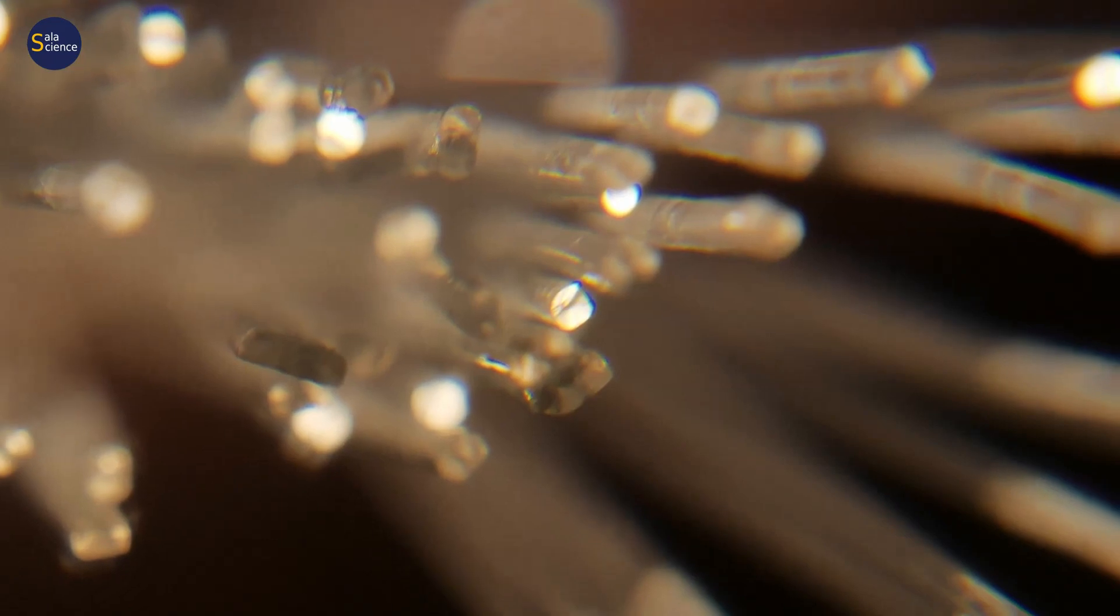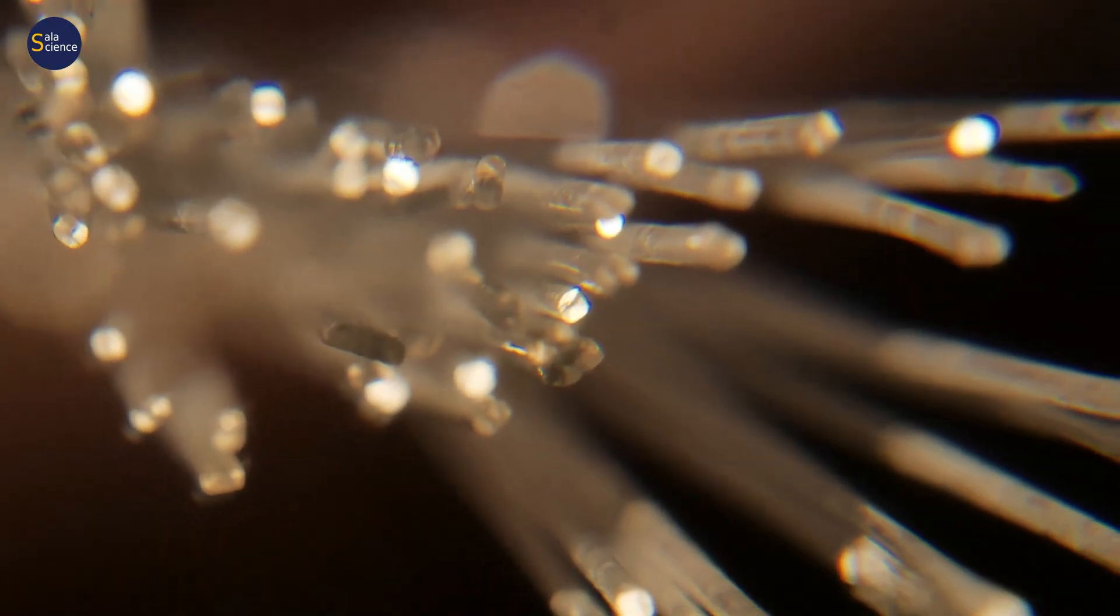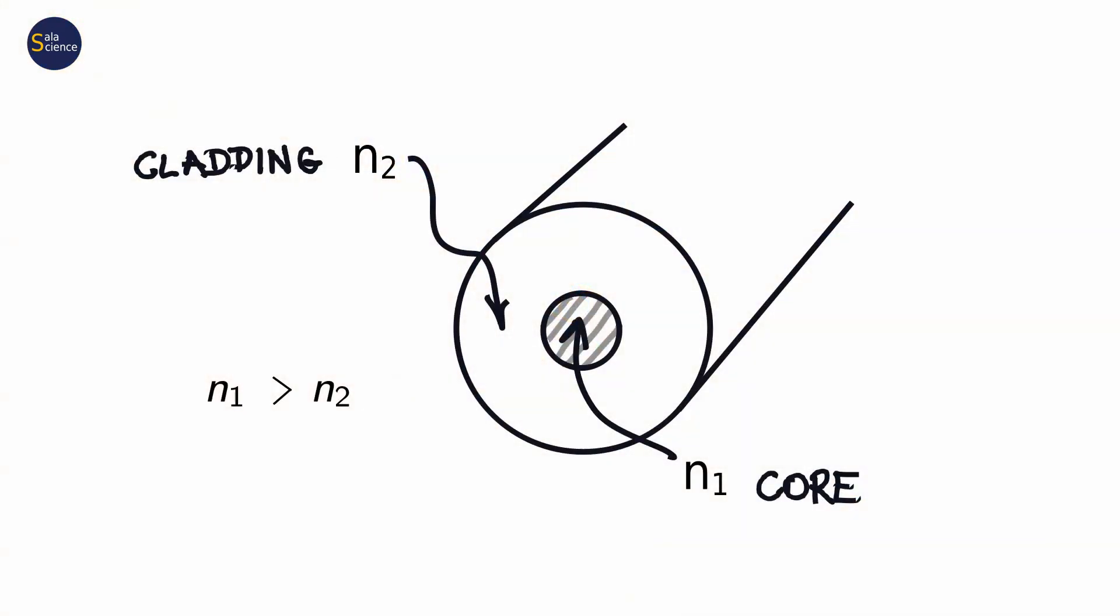Hi. In this episode I'm going to talk about optical fibers. Such fibers have circular cross-section and consist of a core with higher refractive index and a cladding, which refractive index is lower.